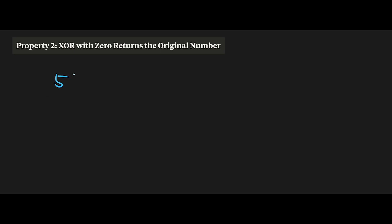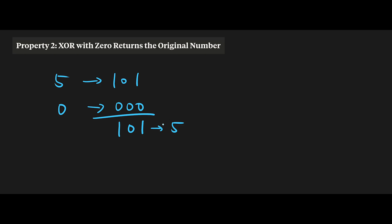Property number two: exclusive OR with 0 returns the original number. If you exclusive OR any number with 0, you get the original number back. For example, 5 in binary is 1,0,1 and 0 is 0,0,0. Calculating: 1 XOR 0 = 1 (different), 0 XOR 0 = 0 (same), 1 XOR 0 = 1 (different). Result is 1,0,1 which is 5 — nothing changed.